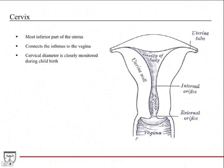The cervix is the most inferior part of the uterus, indicated by this region here. It connects the isthmus of the uterus directly to the vagina. The cervical diameter — the length of the lumen — is closely monitored during childbirth because it gives an indication of how labor is progressing and how close the mother is to delivering.